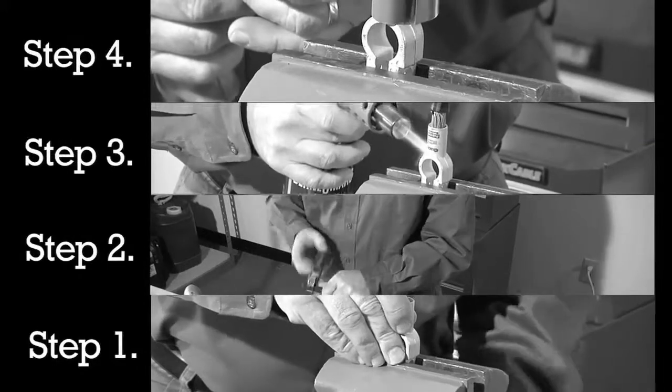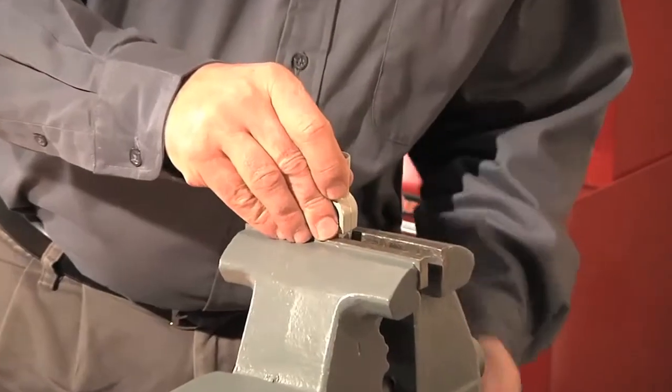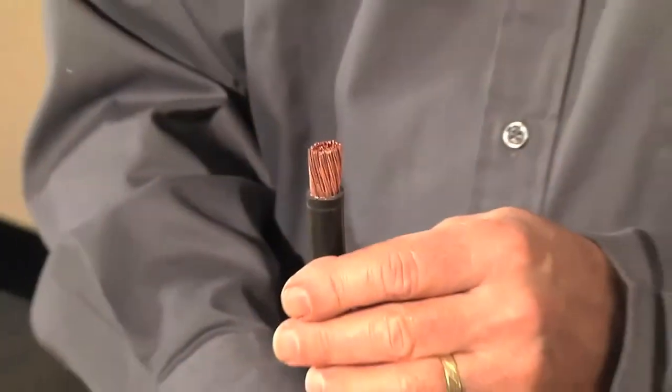There are four easy steps to guarantee a perfect bond with fusion connectors. First, clamp the connector, then strip the cable exposing about seven-eighths of an inch of the wire depending on the connector you are using.